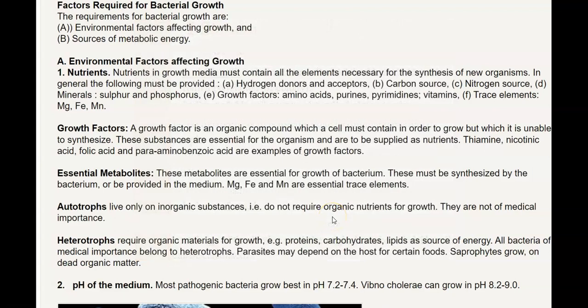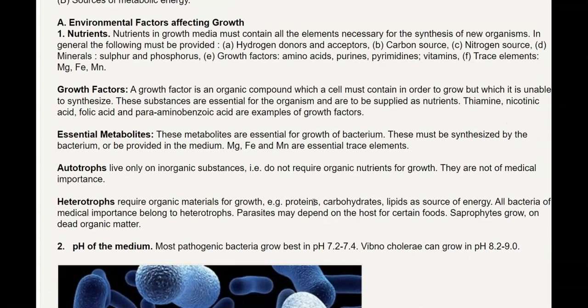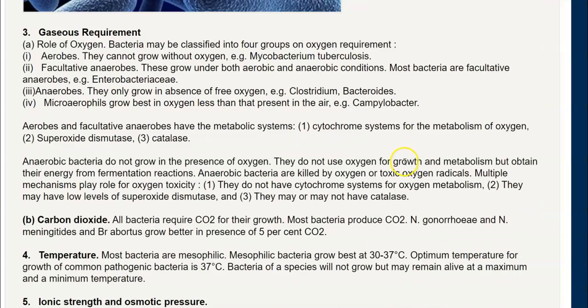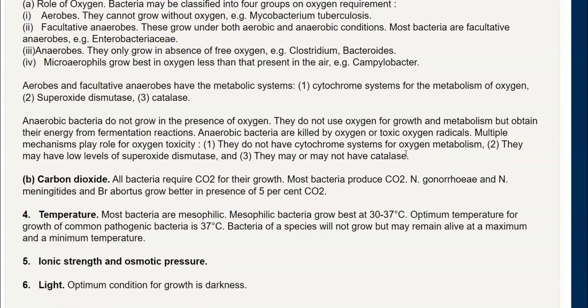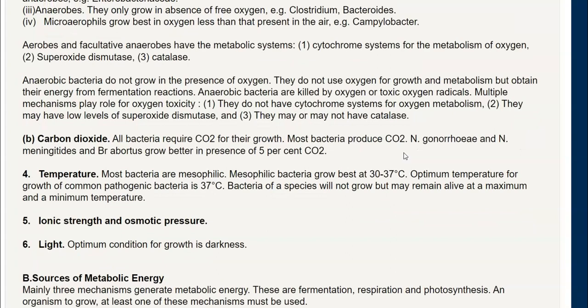Finally, we look at the factors affecting bacterial cell growth, divided into two categories: environmental factors and sources of metabolic energy. Environmental factors include nutrients (growth factors, essential metabolites, autotrophic vs. heterotrophic differences), pH of the medium, oxygen requirements, carbon dioxide levels, temperature, ionic strength and osmotic pressure, and light as an important factor affecting organism growth.